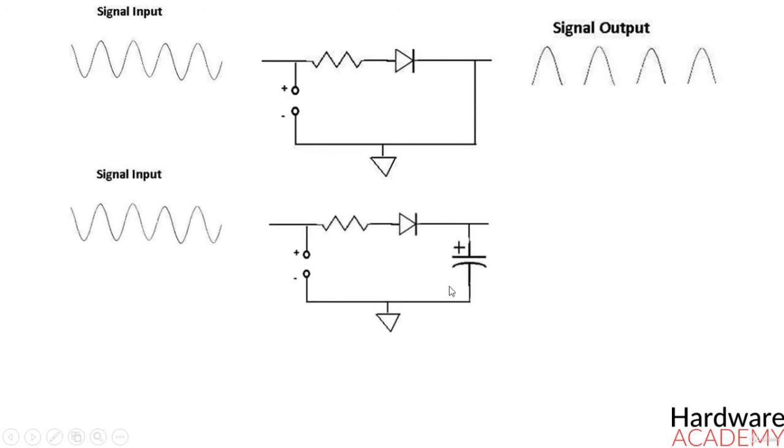If you place a smoothing capacitor in parallel with the diode, like this, the resulting waveform will be, you can see now how much smoother the waveform is.